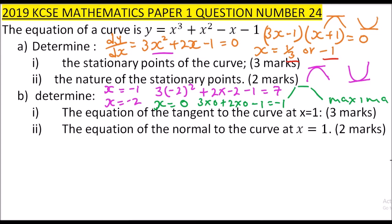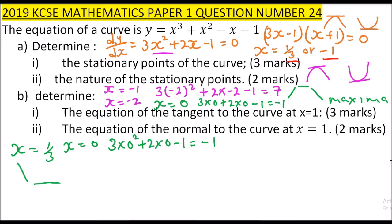Now we check the other turning point at x = 1/3. The point to the left is x = 0, and we already found that 3(0)² + 2(0) - 1 = -1, so the gradient is negative on the left side. At the turning point itself, the gradient is 0.